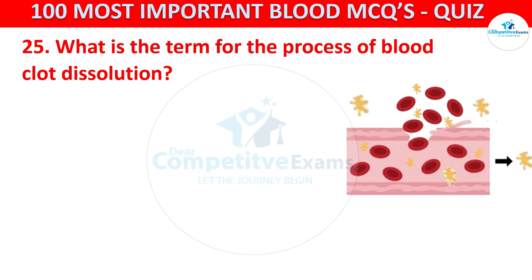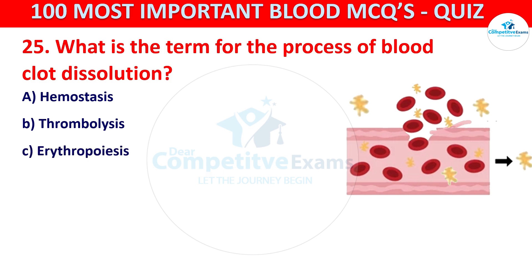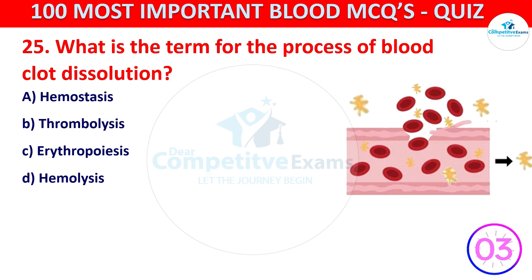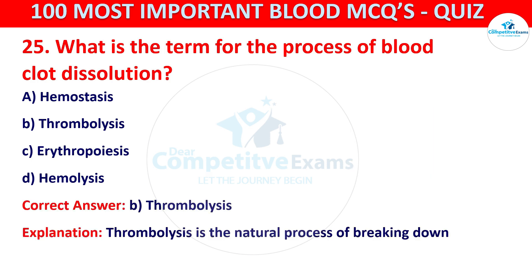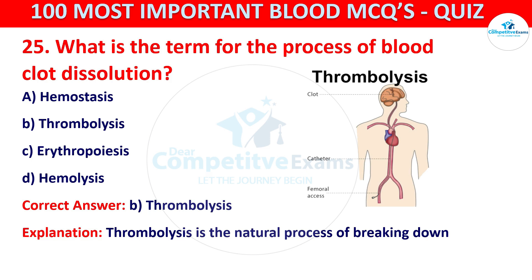Your options are Hemostasis, Thrombolysis, Erythropoiesis, or Hemolysis. The correct answer is B, that is Thrombolysis. Thrombolysis is the natural process of breaking down blood clots. Question 26.